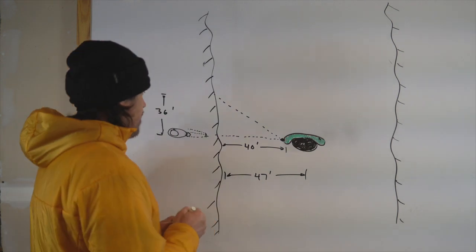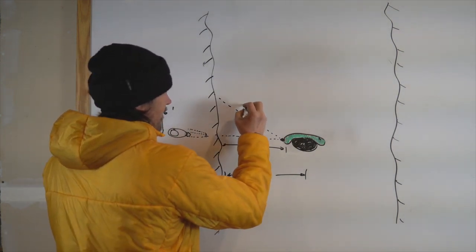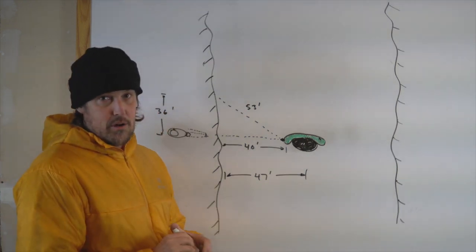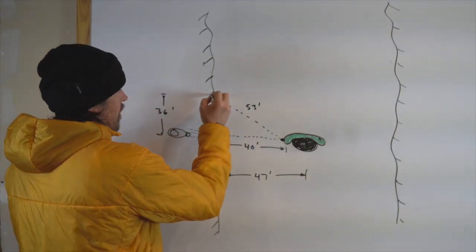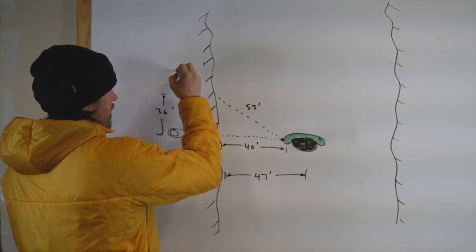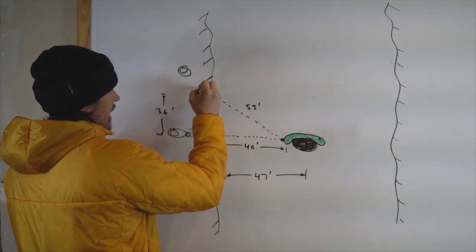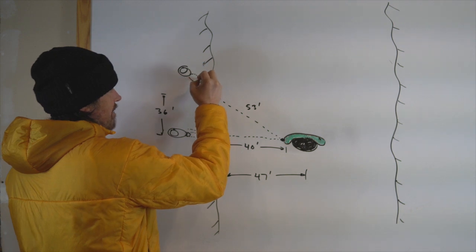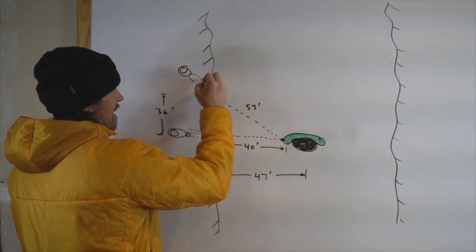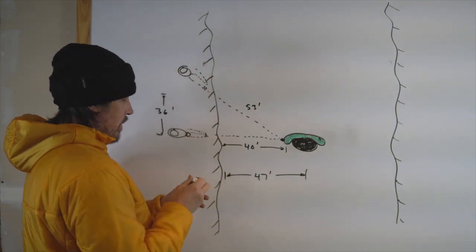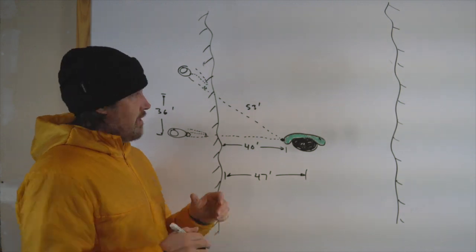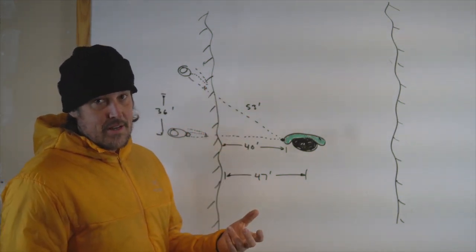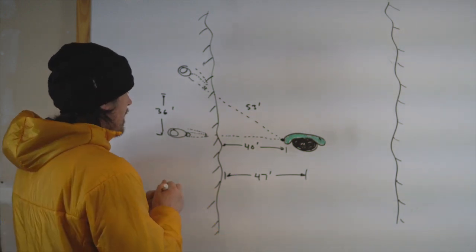I'm going to do Pythagorean's theorem. If this is 36 and this is 40, a squared plus b squared equals c squared. Let me go to my computer to find out what this length is based on Pythagorean's theorem. This is 40, this is 36, this is 53 feet. We have 53 feet of rope. But as soon as we want to go up to our anchor, which is 10 feet away, that gets us to 63 feet.